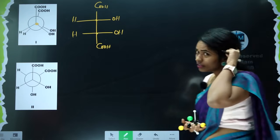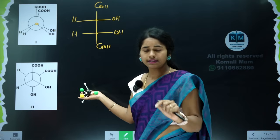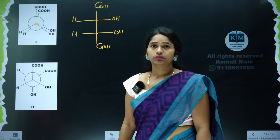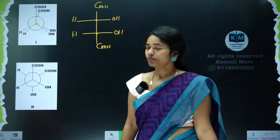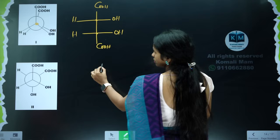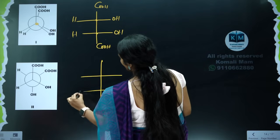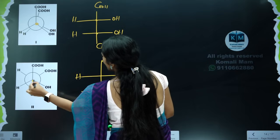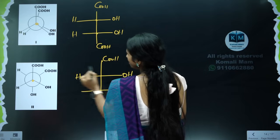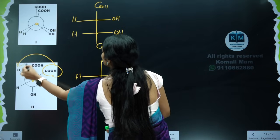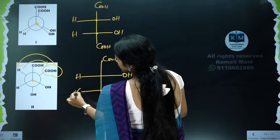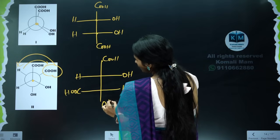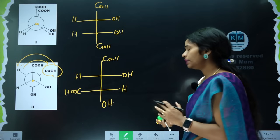Now try this question: pause the video. For this structure, COOH front carbon, write as usual; back carbon you move this group this side, this group that side. COOH, H here, OH here.